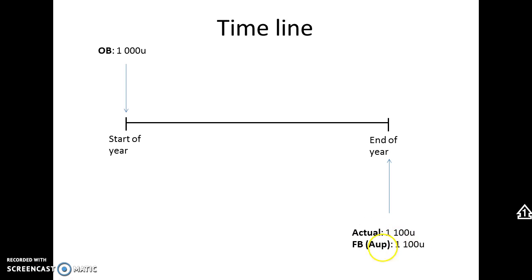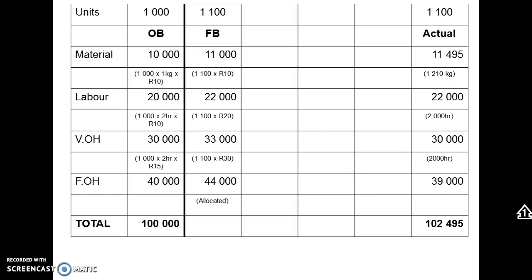We prepare a new flexible budget (FB) at the end of the year for the actual units produced (AUP) of 1100 units. This flexible budget is the 'should have been' column — how much should it have cost us to make 1100 units? For example, if material costs 10,000 Rand for 1000 units, that's 10 Rand per unit; multiplied by 1100 units gives 11,000 Rand. The same logic applies to labor and variable overheads — all variable costs are flexed upward by 10%.